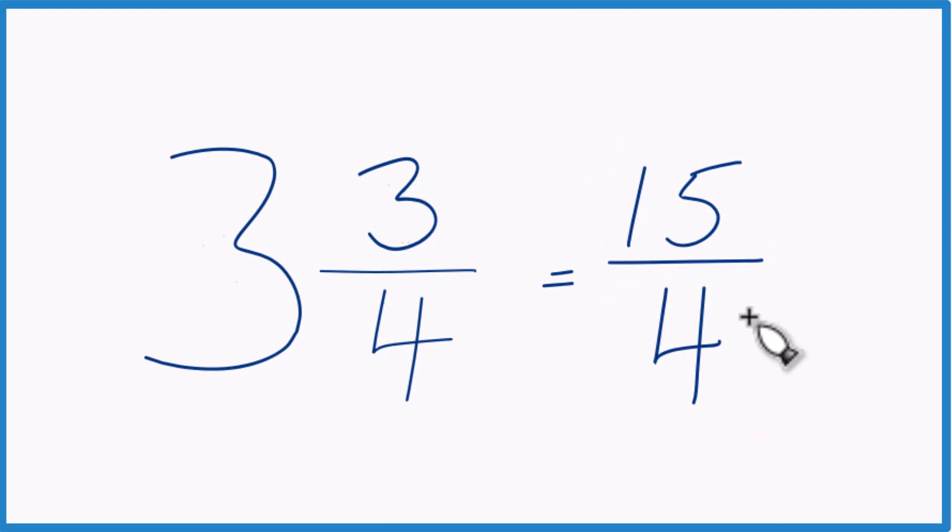Let's do it again. 3 times 4 is 12. 12 plus 3, that's 15. Bring the 4 across, 15 fourths.